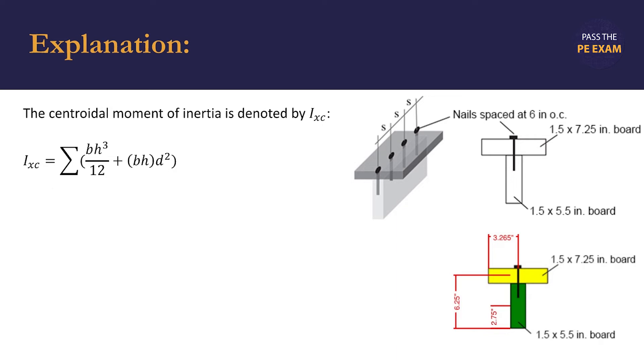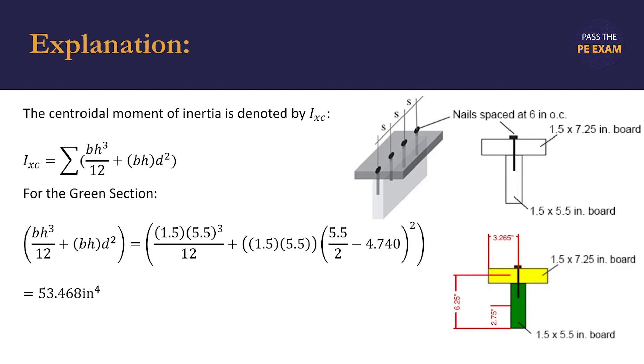As we solve for the green section, we substitute in our values, and we note again that d is the distance between the y-coordinate of the centroid that we just calculated, that is the 4.740 inches, and the center of the individual section. Simplifying, we find that the centroidal moment of inertia for the green section is 53.468 quartic inches.